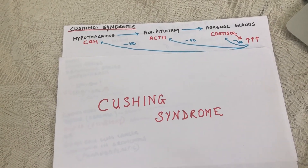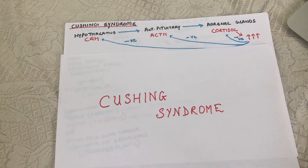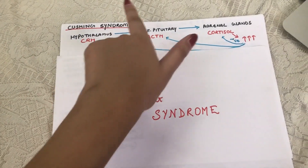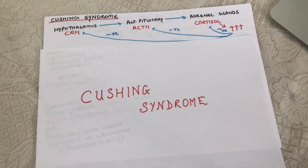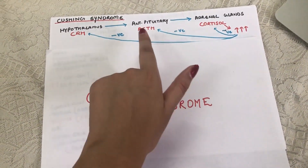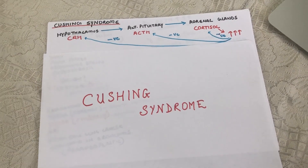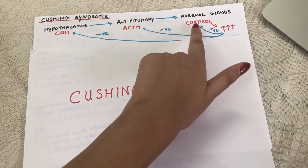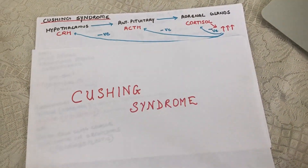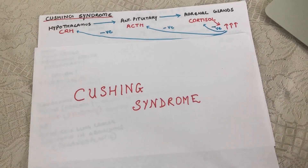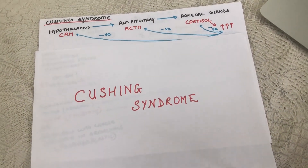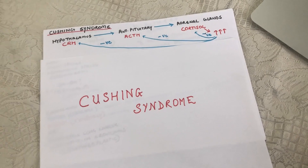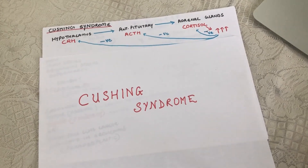In the hypothalamus you have a peptide hormone called CRH that gets released in response to stress. This hormone then acts on the anterior pituitary and stimulates the release of ACTH. ACTH in turn travels to the zona fasciculata of the adrenal cortex and releases cortisol.